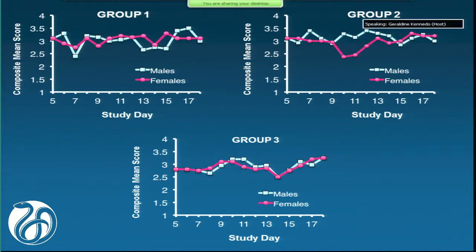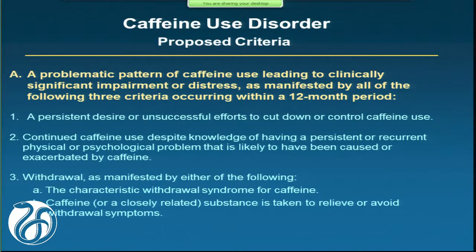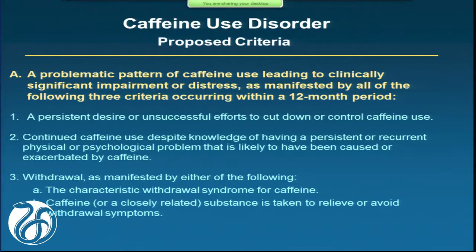Here are the results. The group that continued on the same dose of caffeine remained symptom-free. The group that had the sudden reduction showed that females had symptoms — they lost some of their alertness — but the males didn't show anything. The group that got the gradual reduction, similar to what we did in our methadone study, showed a very similar response. I present this as probably the only study of its kind where people were on 400 to 500 milligrams of caffeine a day and didn't know they were being tested for caffeine withdrawal.